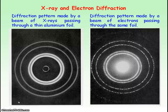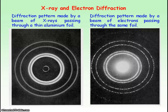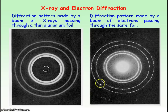The diagram on the left shows the diffraction pattern made by a beam of X-rays passing through a thin aluminium foil, and the diagram on the right shows the diffraction pattern made by a beam of electrons passing through the same aluminium foil. The de Broglie wavelength of the electrons is the same as the wavelength of the X-rays — on the order of 10⁻¹⁰ metres — and you can see that the diffraction patterns are very similar, with the same spacing of the bright rings.